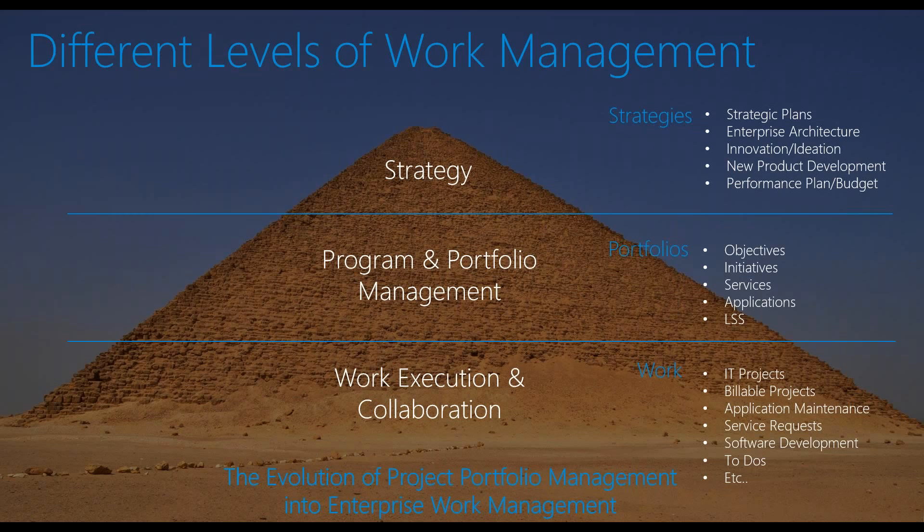At the work execution level, there are all kinds of work: traditional internal IT projects, customer-facing billable projects, application maintenance or service requests, ongoing software development — whether internal, customer-facing, or product-oriented — and lower-level to-dos and activities that support higher-level work items. It gets complex, and a lot of times these things get initiated from different angles, with many components to consider when structuring work management processes.